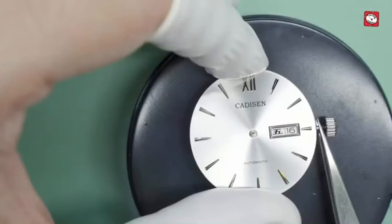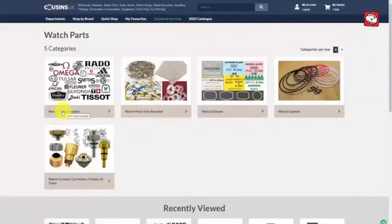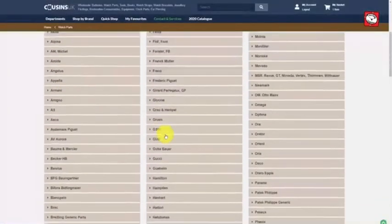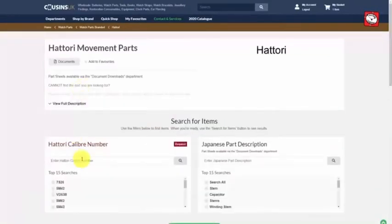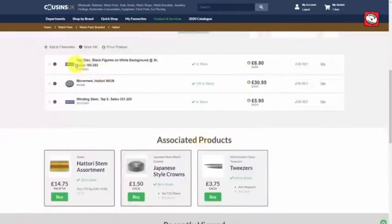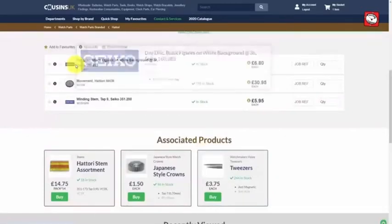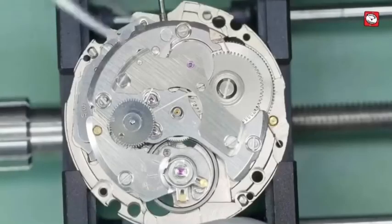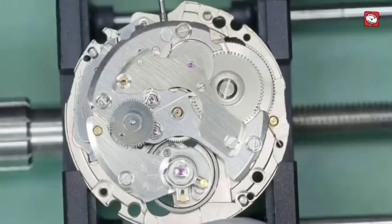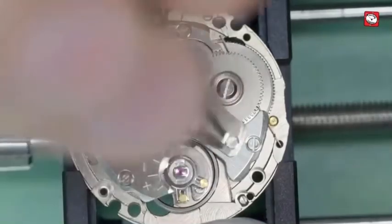But here we are. I checked on the cousin's website to see if parts were available for the NH36A. And with regret, the only choices we are presented with is a new calendar disc, a new movement, or a new winding stem. So I decided to purchase a new movement so at least I could get this watch working again.